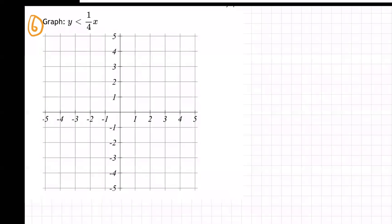Okay, so they want us to graph. Let me bring it over here. Y is less than one fourth X. So how do we do it? Well, first off, whatever number is out here to the right, which is nothing, so that's going to mean zero.